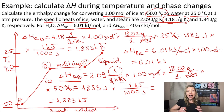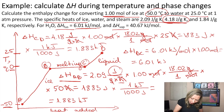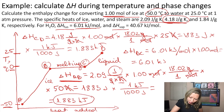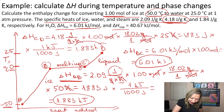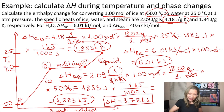We're almost done. Now I know the enthalpy change for all three processes. In the last step, I simply add the three enthalpy changes together: delta H_AB + delta H_BC + delta H_CD = 1.883 + 6.01 + 1.883 = 9.78 kilojoules. I hope this makes sense — see you in the next video.